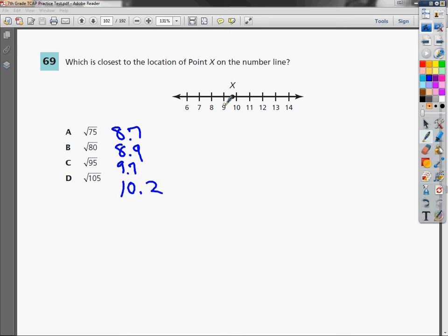So what I'm going to do is find the number that's between 9 and 10, which is, of course, 9.7 or the square root of 95.